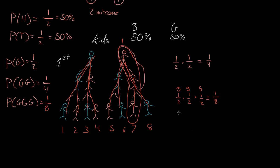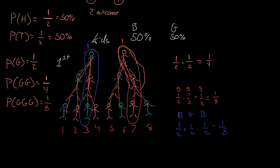Now let's do this for a specific sequence: a boy, then a girl, then a boy. The probability of the first child being a boy is one out of two, the probability of a girl is one out of two, and the probability of a boy is one out of two. That's again one out of eight. And looking at the tree, boy-girl-boy is indeed one outcome out of eight.